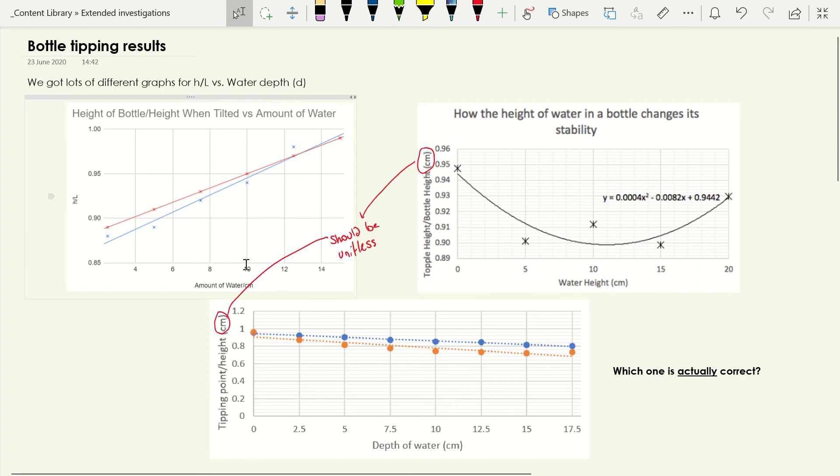One little thing I would pick up about these graphs, which I saw in quite a lot of them, is on the y-axis a few people have said that this is h over l. So h is measured in centimeters, and then we divided it by l which is also measured in centimeters, and these units cancel out. So we end up with something that is unitless. There should actually be no unit on this y-axis because we've got h over l. You can see that's been done correctly on this one at the top, but these ones at the bottom we shouldn't have a unit there.